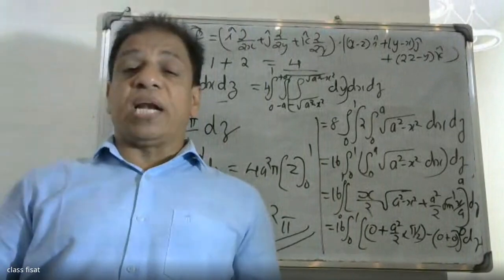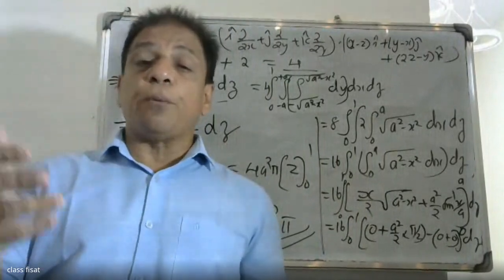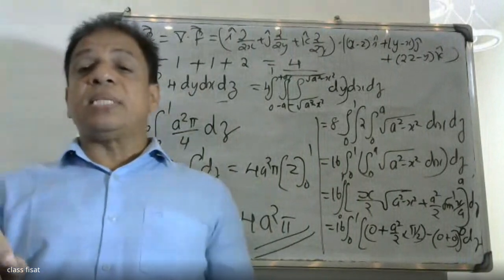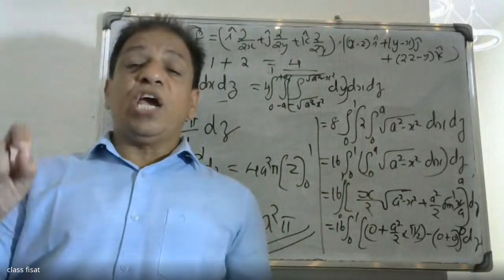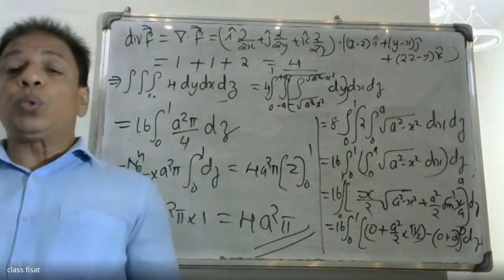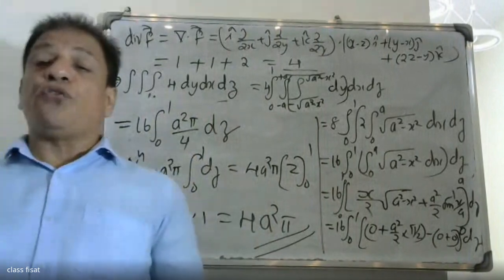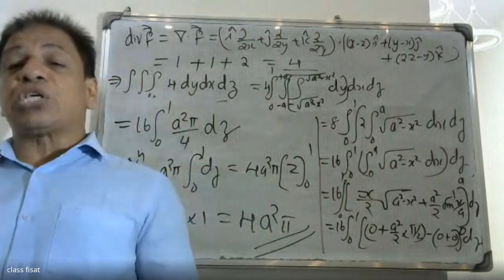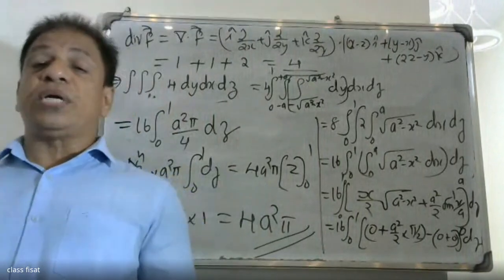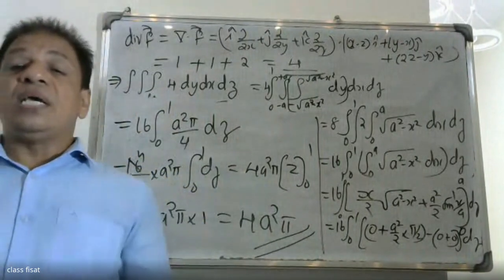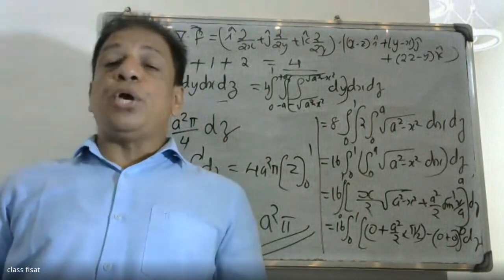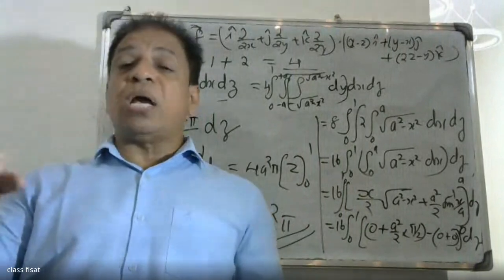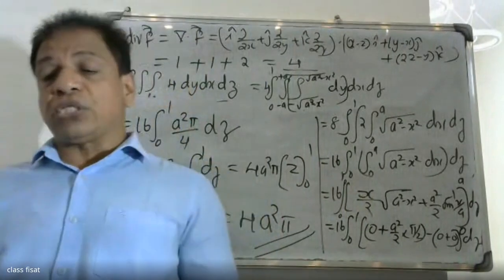To recap the property of the definite integral for an even function: the integral from minus a to plus a of f(x) dx equals 2 times the integral from 0 to a of f(x) dx. Since root of (s squared minus x squared) is an even function, we apply this: minus root of (s squared minus x squared) integrated becomes 2 times integral from 0 to s.